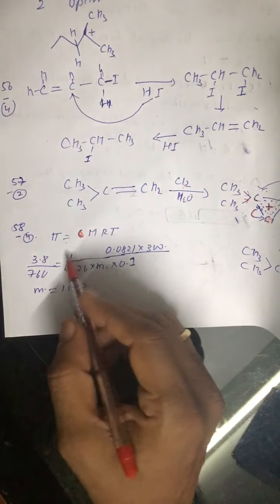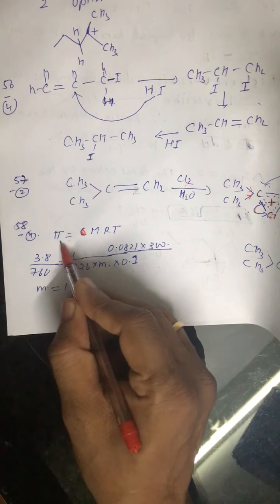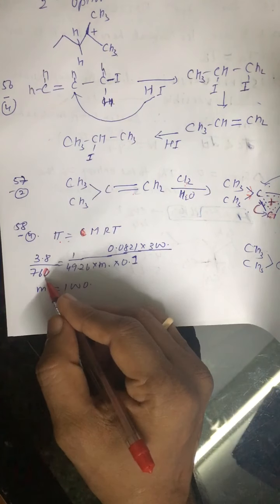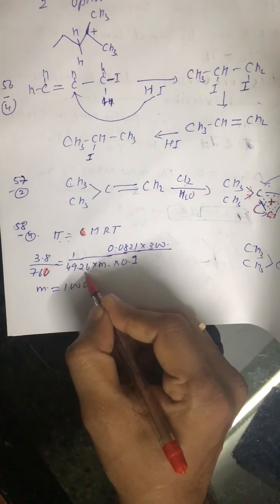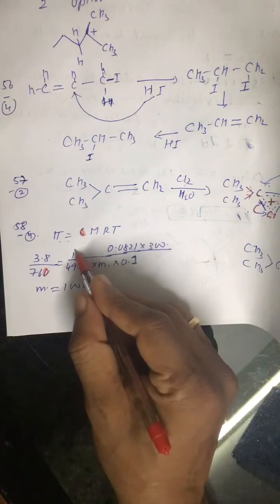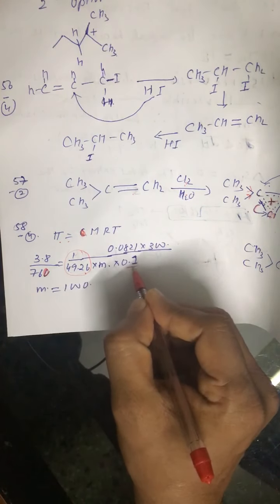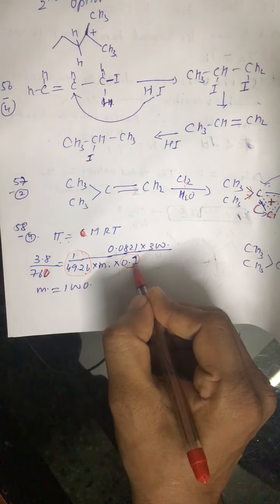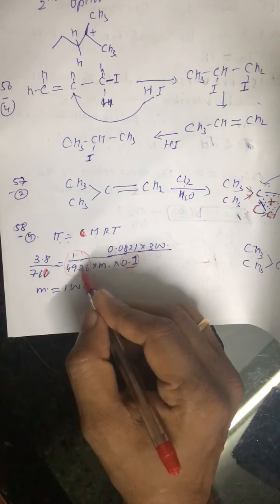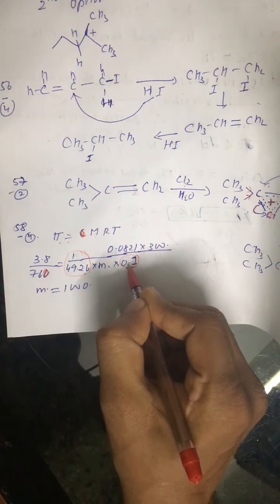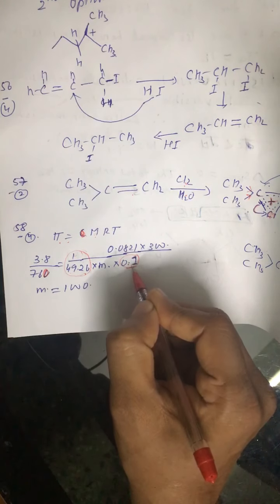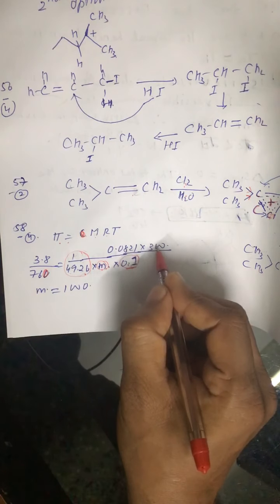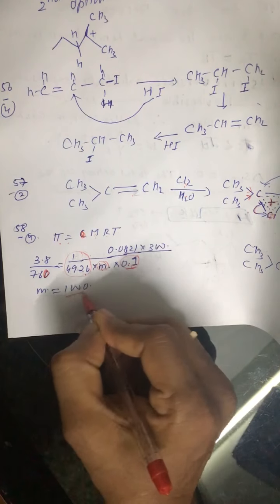The osmotic pressure is 3.8 mmHg divided by 760 to convert to atmosphere. Concentration or molarity is 1 by 49.26 — this is mass in grams per 100 mL of solution, so volume in liters is 0.1. This gives concentration in grams per liter divided by the molar mass M of the protein. R is 0.0821 and temperature is 300 K. Solving gives M equal to 1000.